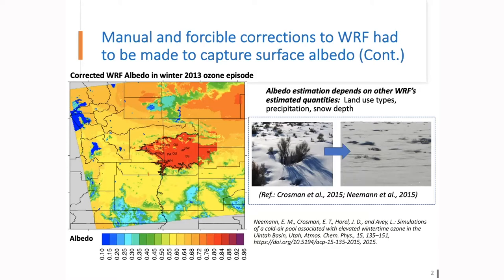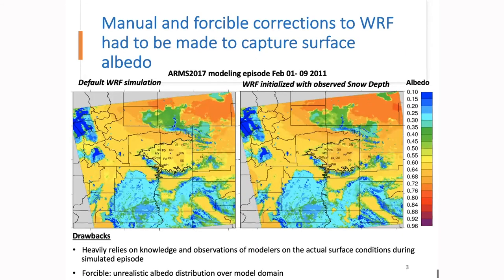In dealing with the 2013 ozone episode, the modelers lowered the snow water equivalent thresholds for certain vegetation types in the model grid so that the grid cell is allowed to be fully snow-covered with less snow on the ground. This modification together with other modifications by UOU were able to get WAF to simulate albedos above 0.8. However, as shown in the map on the left, the resultant albedo distribution looks unrealistic, making the Uinta basins appear distinct from the surrounding area.